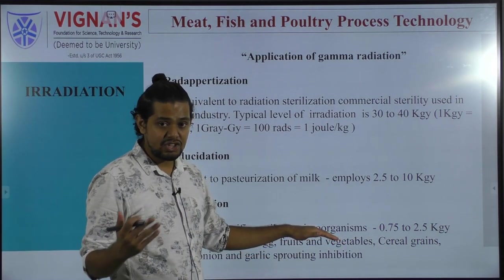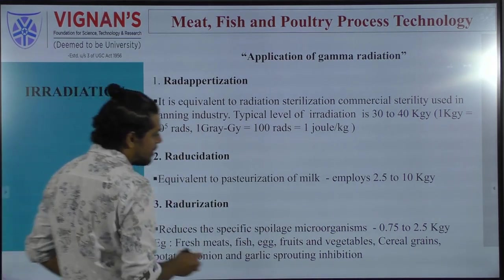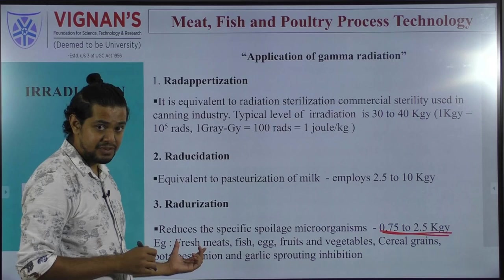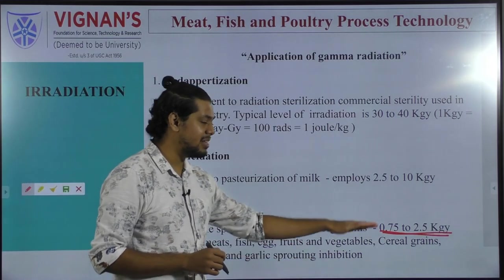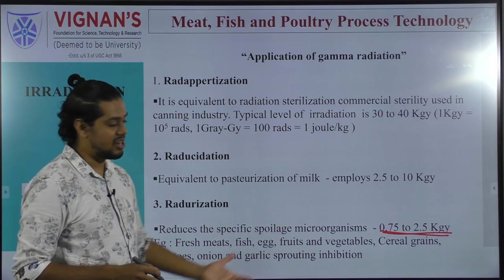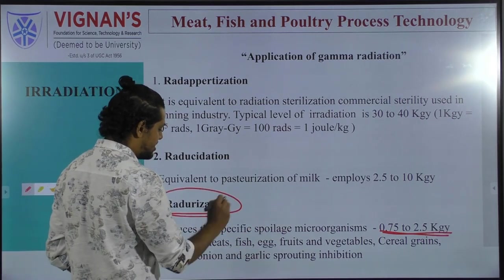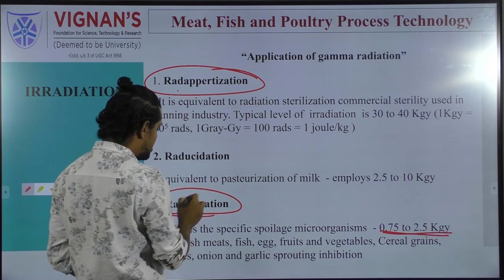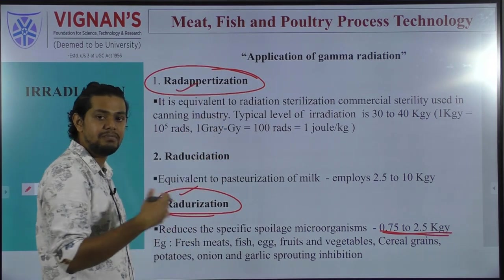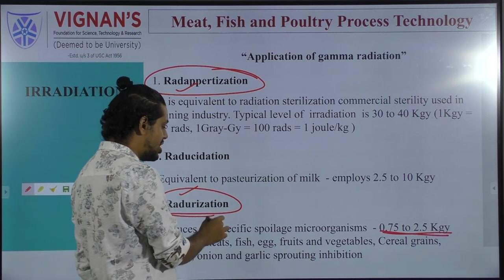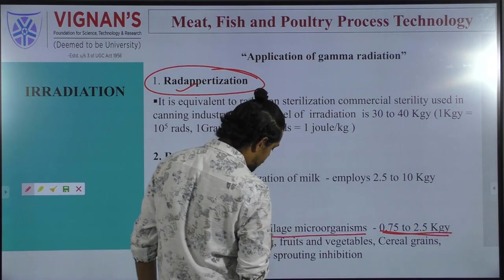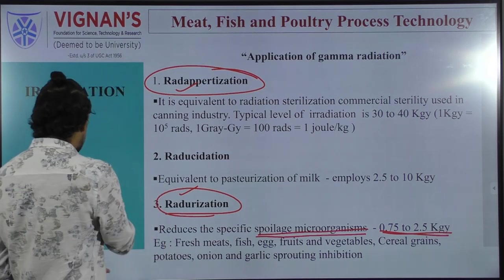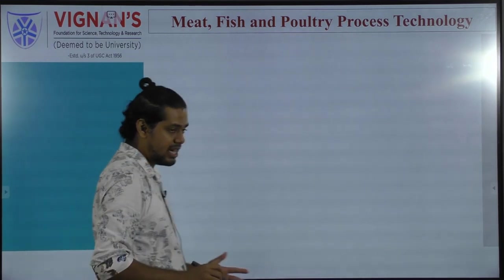Radurization reduces the spoilage species of microorganisms using 0.75 to 2.5 kilogray and is mostly suitable for fresh meats, eggs, fruits and vegetables, cereal grains, potatoes, onions, and other products. For the meat industry, radapertization — for canning of meat — and radurization — to control spoilage microorganisms — are the most important applications.